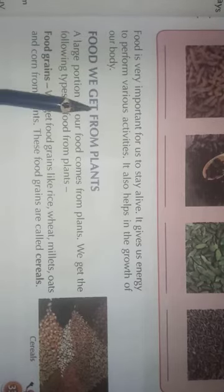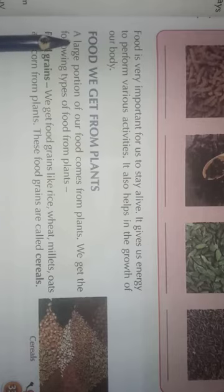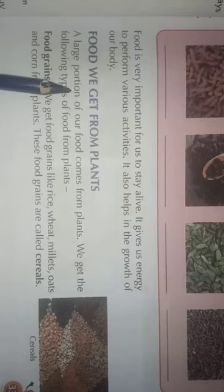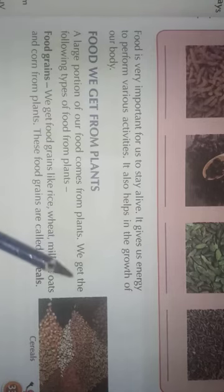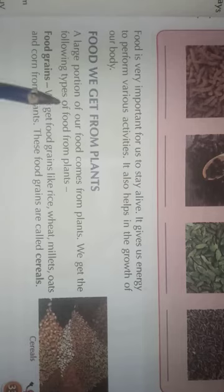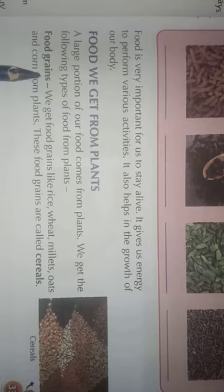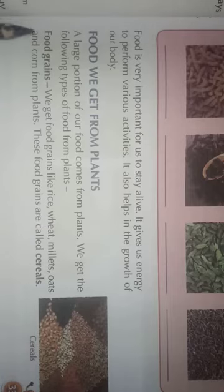The food we get from plants — we get the following types of food from plants. First are cereals, which means food grains. We get food grains like rice, wheat, millet, oats and corn from plants.